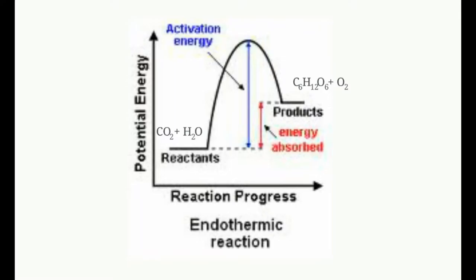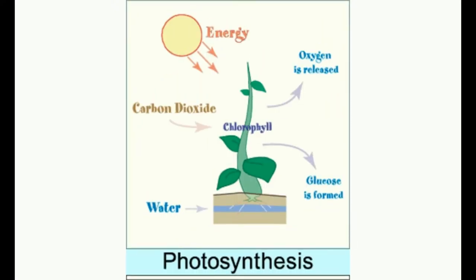Does anybody know what C₆H₁₂O₆ is? That is glucose. What is the only thing on the planet that can take CO₂ and H₂O and make glucose? Plants. Energy is absorbed right here. Plants are the only thing that can naturally absorb energy from the sun and turn it into something useful — stored in the bonds of the glucose molecule. This is also what we call photosynthesis.